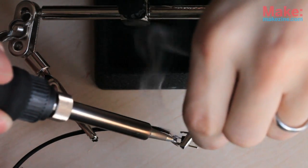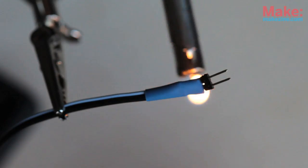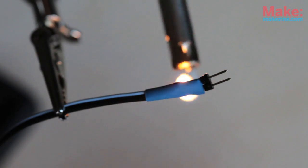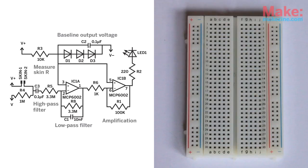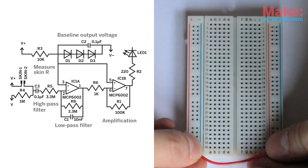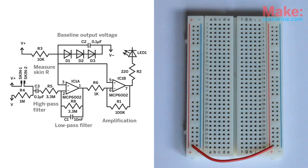Solder the wires from each of the sensors to a pair of header pins. Now let's move over to the breadboard. The circuit for the truth meter is pretty simple. Let's step through what's happening as we breadboard it out.